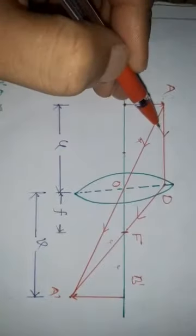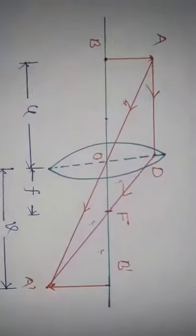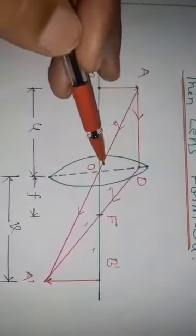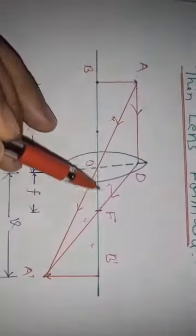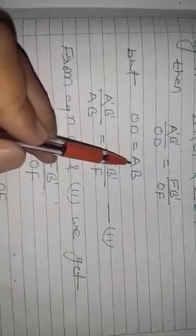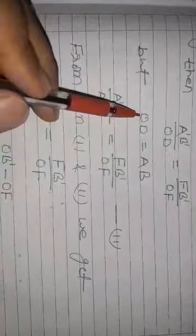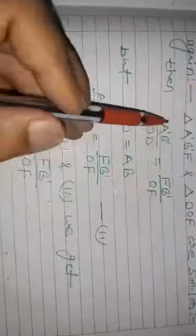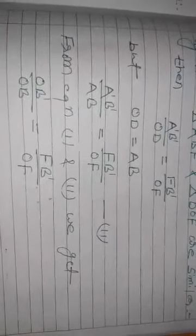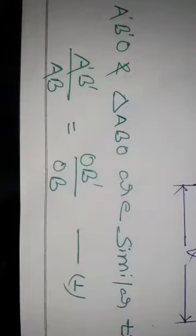By the basic proportionality theorem for triangle A'B'F and DOF: A'B'/OD = FB'/OF. Since OD is approximately equal to AB, this becomes A'B'/AB = FB'/OF. This is equation number two. From equations one and two, the right-hand sides are equal, so: OB'/OB = FB'/OF.